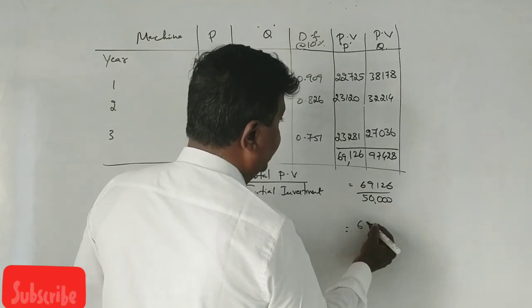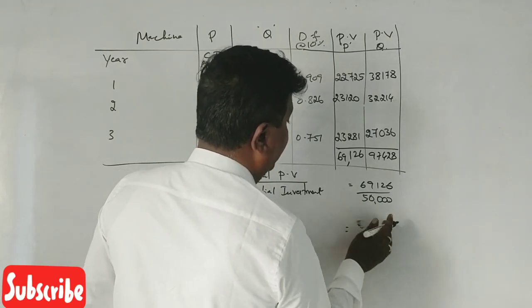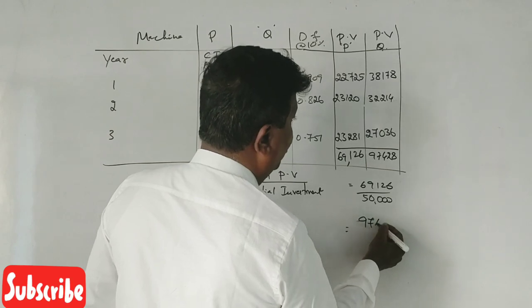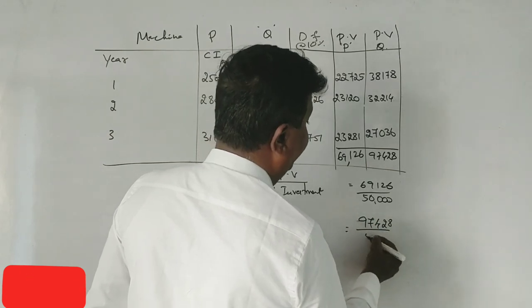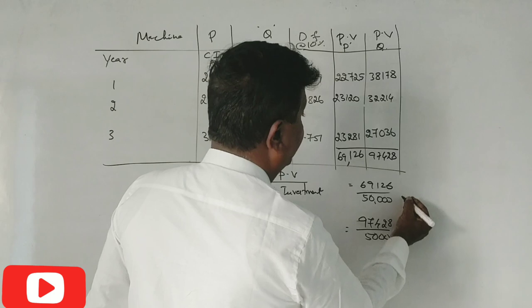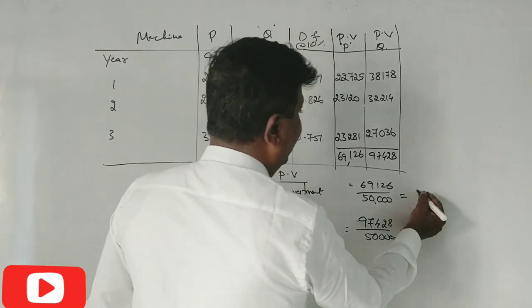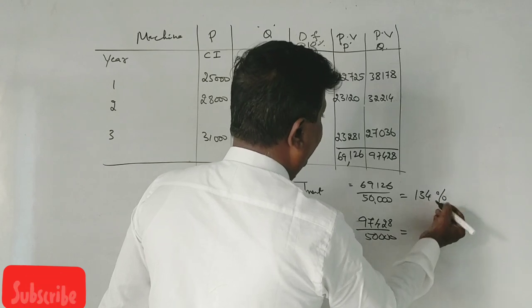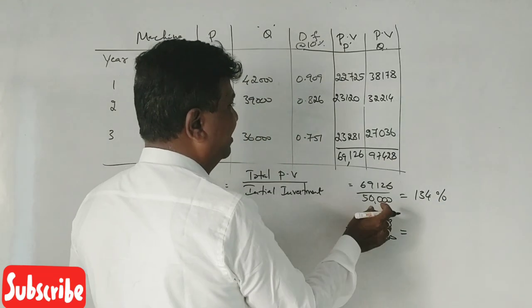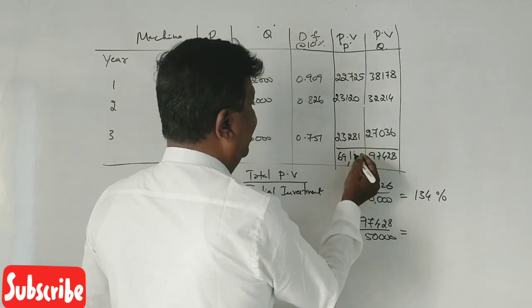97,428 divided by 50,000. Sir, I'm 134. 69,134? Yeah. Last one. Yeah, sir.